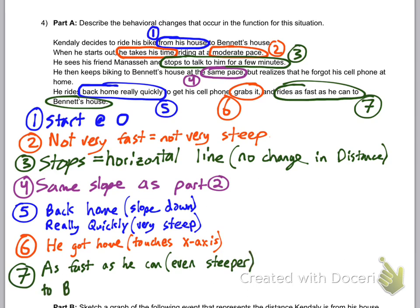And it says he got to Bennett's house, to Bennett's house. That means it ends all the way at the top. Because that's all the way as far away as possible.